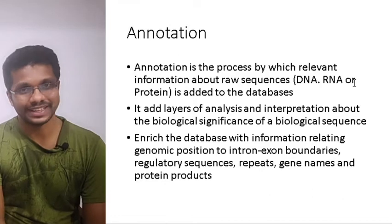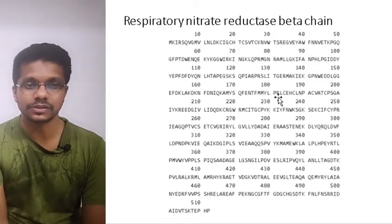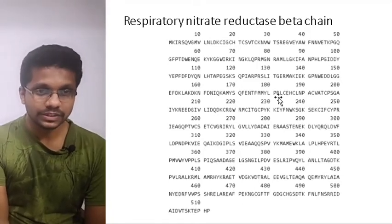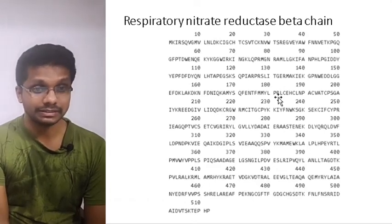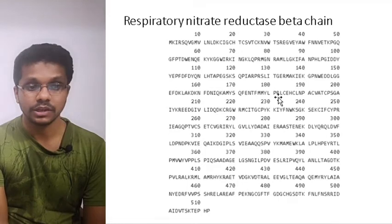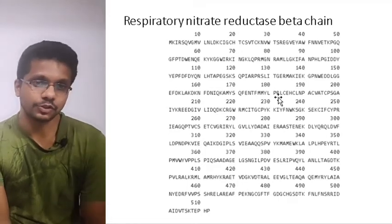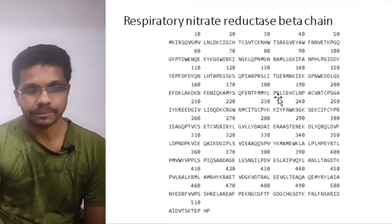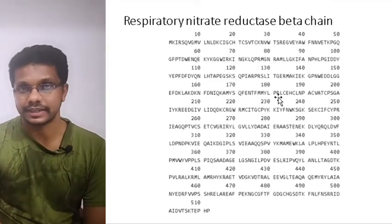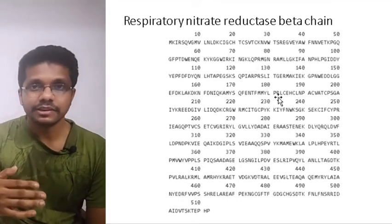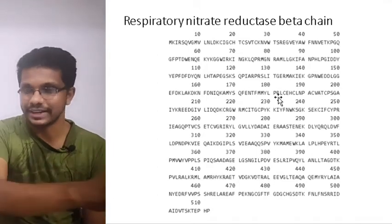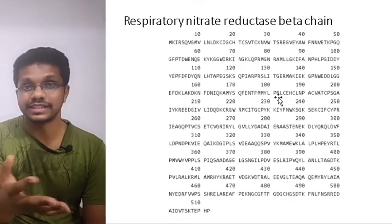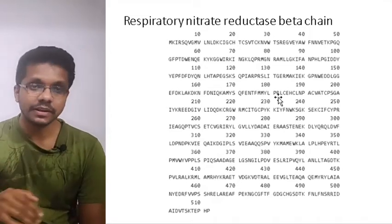Let me show an example. This is the sequence of the respiratory nitrate reductase gene beta J — this is a protein sequence. What we understand from this is that the protein sequence is about 512 amino acids in length. That's all we get — we do not get any other information beyond the length. This is non-annotated data. Some databases store only raw data, so you will see things like this and not get much information about the gene beyond its name and sequence.